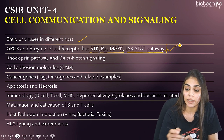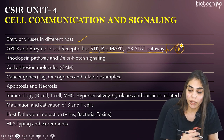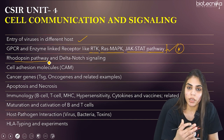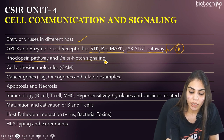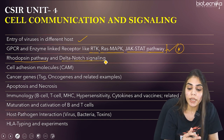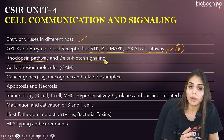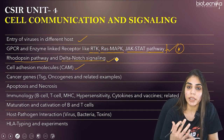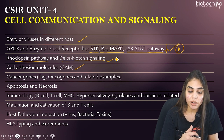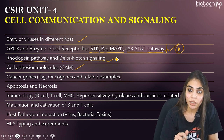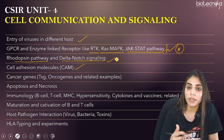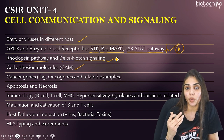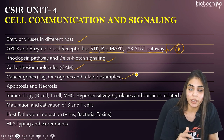Learn all these signaling mechanisms in detail — this is star-marked and should not be skipped. The third is the Rhodopsin pathway, which is part of GPCR signaling, and also Delta-Notch signaling. The fourth is CAM molecules — very important, know their function in detail. The fifth is cancer genes — mutations in tumor suppressor genes and proto-oncogenes, their working mechanisms, and examples of proto-oncogenes and tumor suppressor genes.